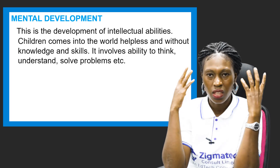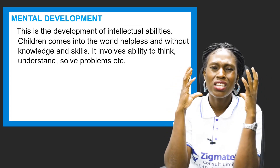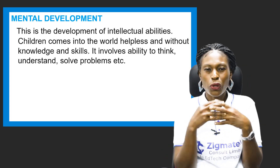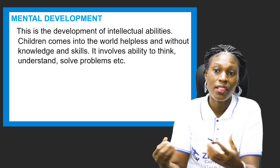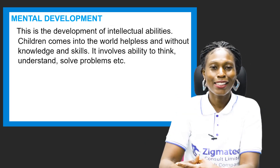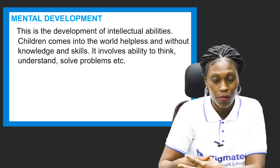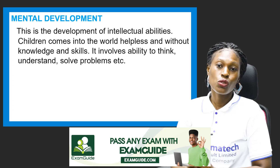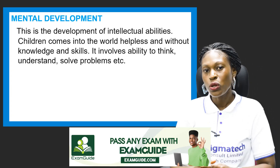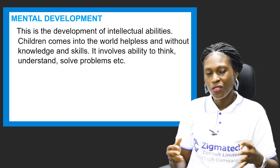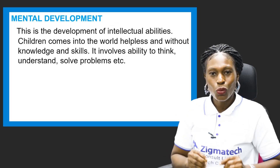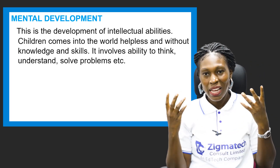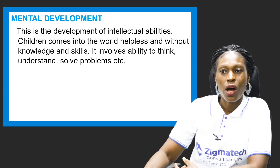The next area is mental development — the development of intellectual abilities for the child to be able to assimilate and portray skills. Children come into the world helpless and without knowledge and skills. When they are born, they don't even know what is happening around them. Mental development involves the ability to think, understand, and solve problems. As they progress, they develop mentally — they understand the environment, understand your signs. When you smile, they know they should smile with you; when you move, they're moving.